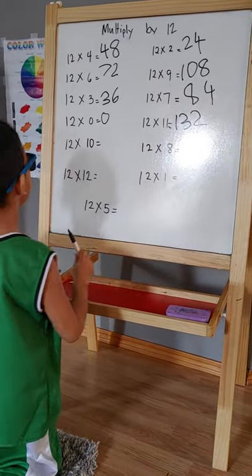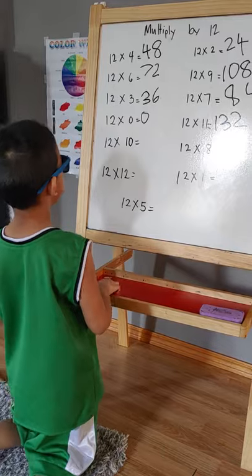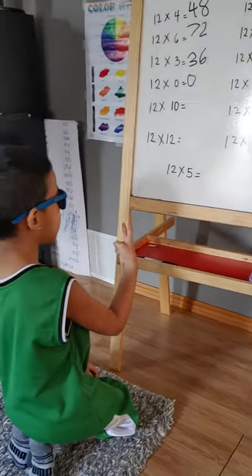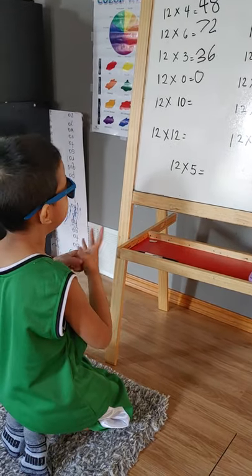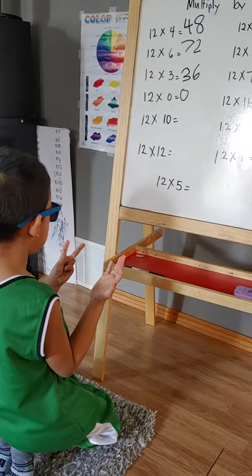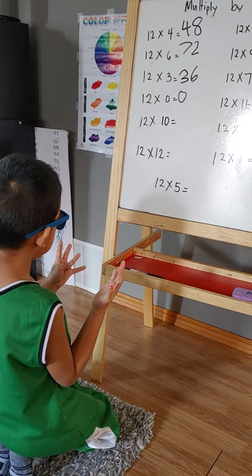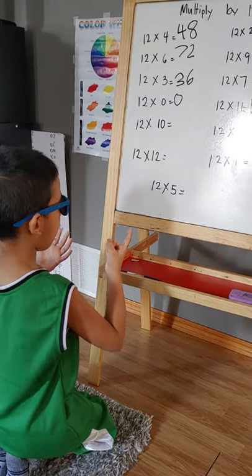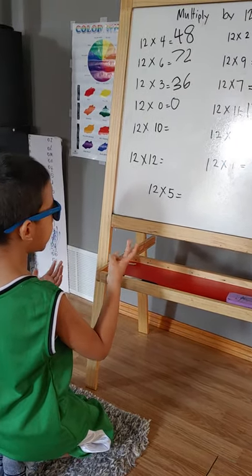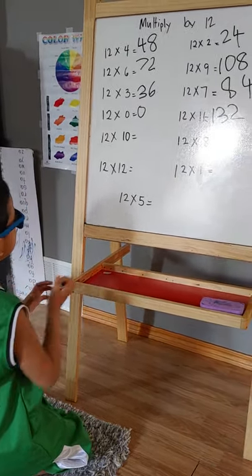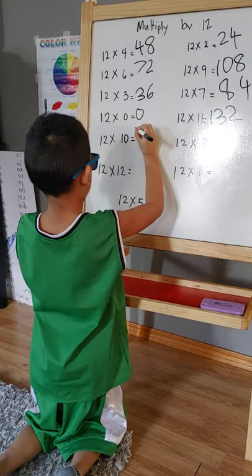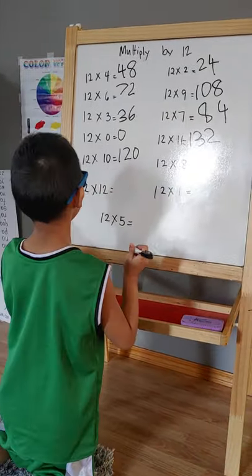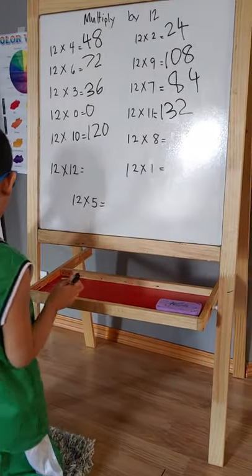Okay, twelve times ten: okay, ten, twenty, thirty, forty, fifty, sixty, seventy, eighty, ninety, one hundred, a hundred and ten, a hundred and twenty, a hundred and twenty, eight.